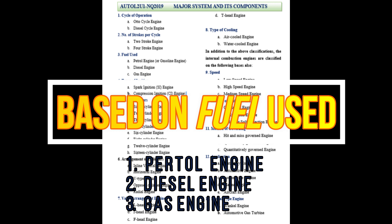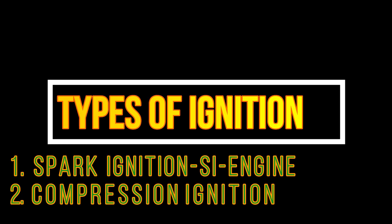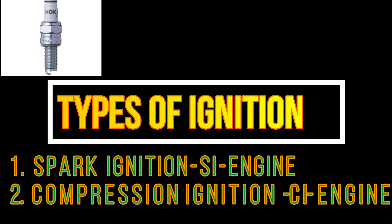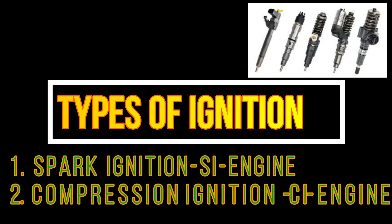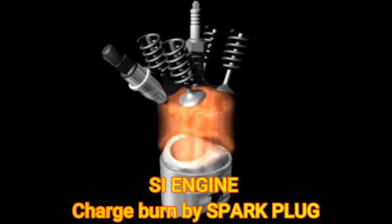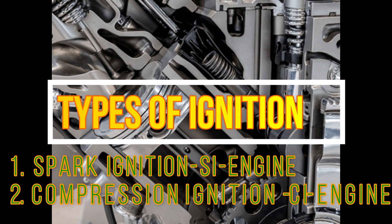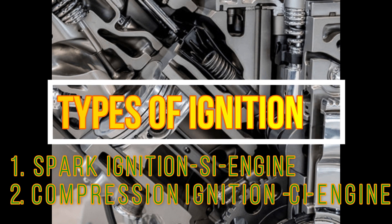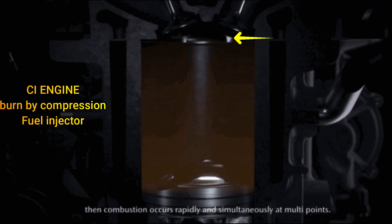Classification by ignition type: how the fuel burns or ignites. That is spark ignition and compression ignition. Spark ignition uses a spark plug to burn the fuel; compression ignition uses high compression.